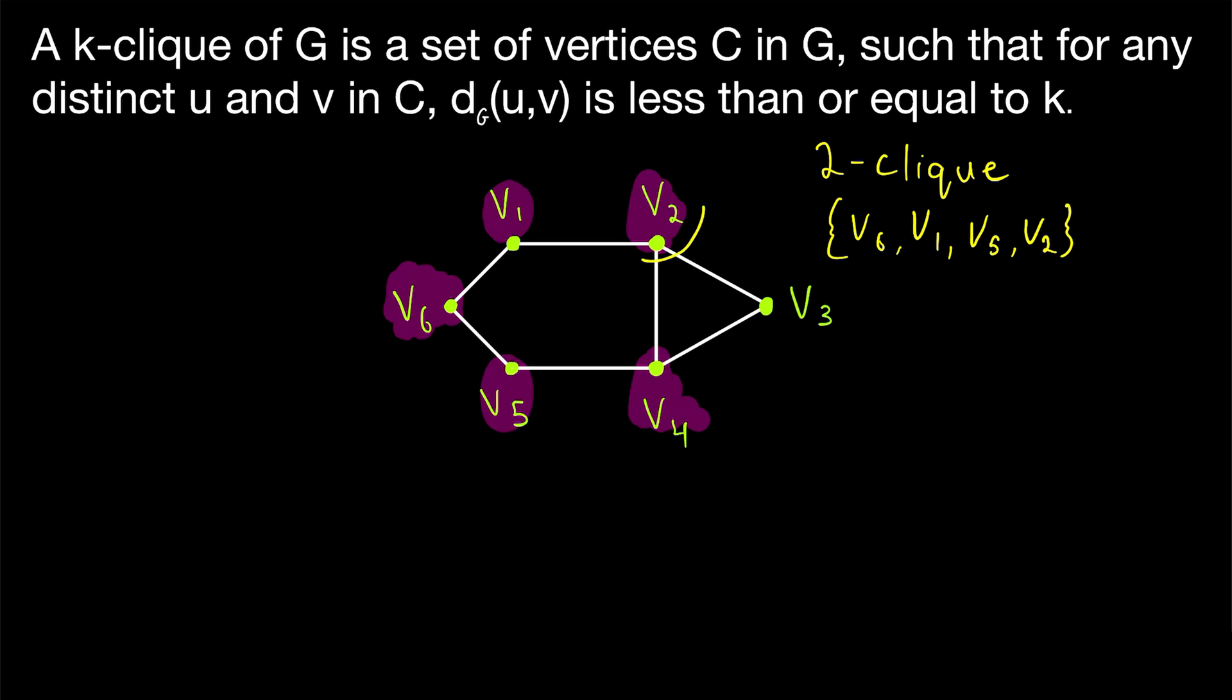The distances between v4 and all four of these vertices in our two-click, all those distances are less than or equal to two. Now, this is a maximal two-click. We can't include the vertex v3 because its distance from v6 is greater than two. It's got a distance of three from v6. So this is a maximal two-click, meaning we cannot expand it with any more vertices. It's also a maximum two-click. There are no two-clicks in this graph with more than five vertices.